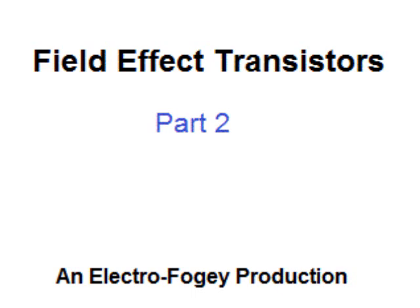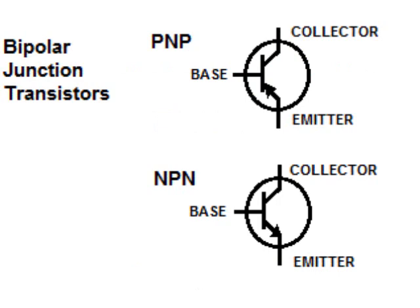Let's see the schematic symbols for our transistors. For Bipolar Junction Transistors, these are the schematic symbols for the two types. PNP is on top and NPN is on the bottom. For each symbol, the collector is at the top, base is in the center, and the emitter is on the bottom. The arrow in each schematic symbol refers to the polarity of the junction between the base and the emitter. Forward biasing a PNP transistor requires that the base-emitter voltage is negative. To forward bias an NPN transistor, the base-emitter voltage must be positive.